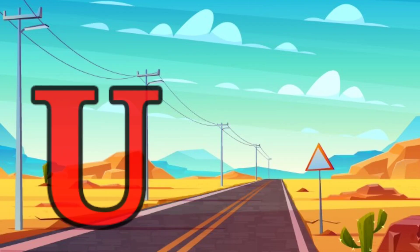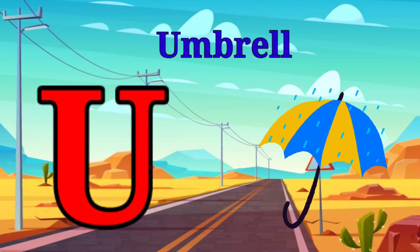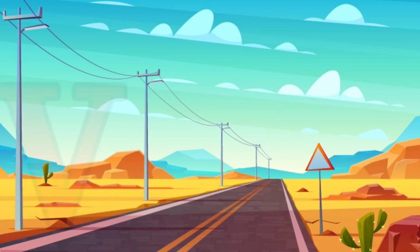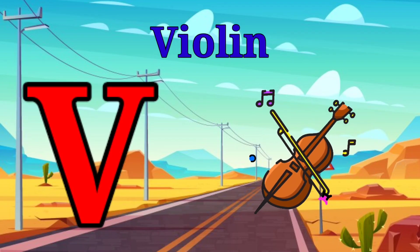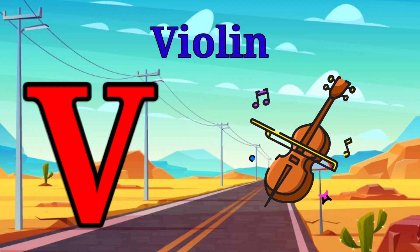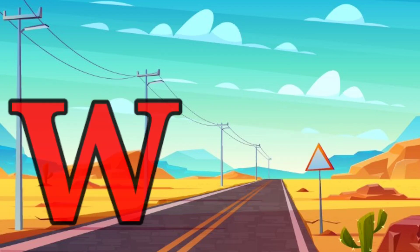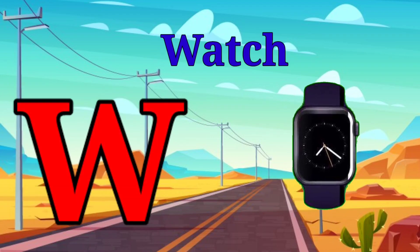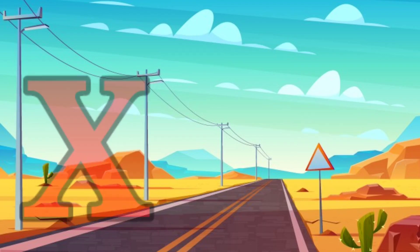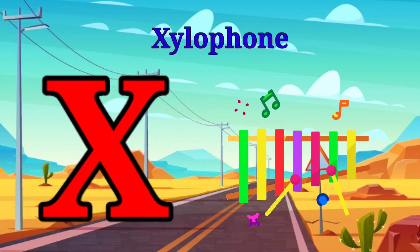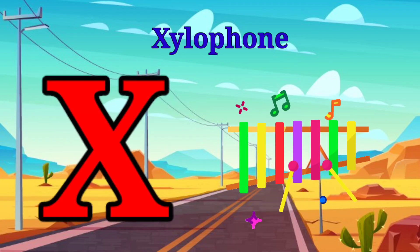U is for umbrella, u-u-umbrella. V is for violin, v-v-violin. W is for watch, w-w-watch. X is for xylophone, x-x-xylophone.